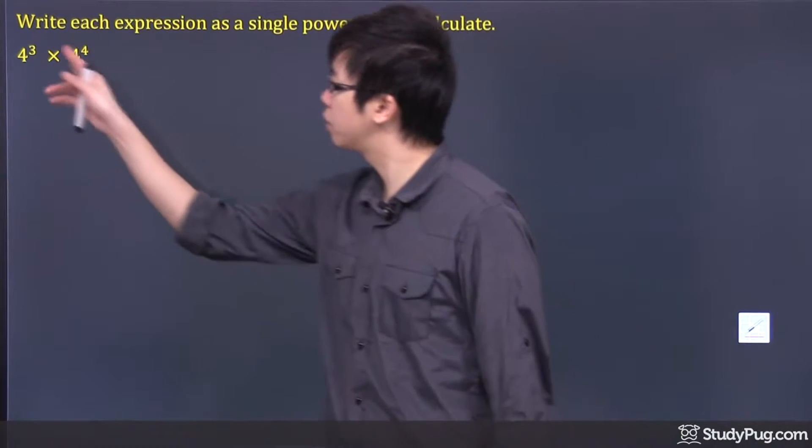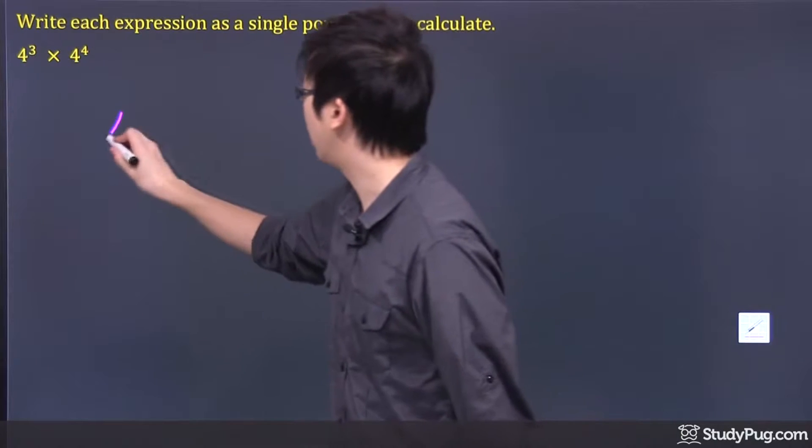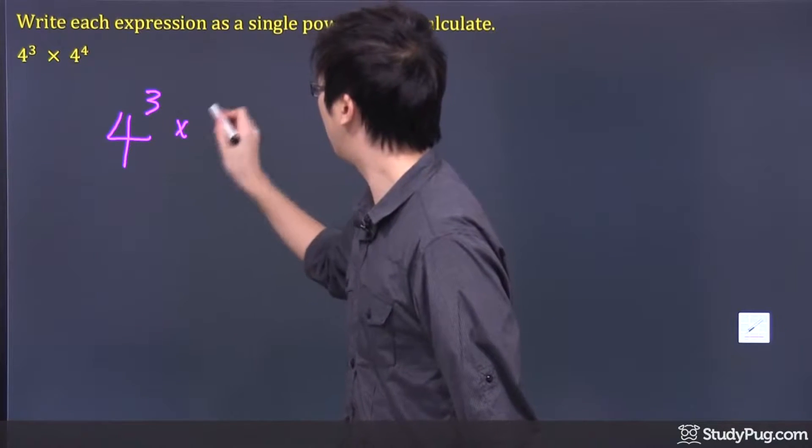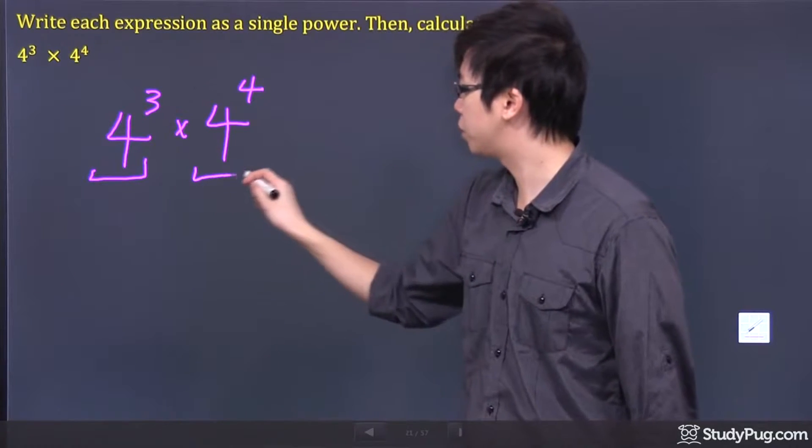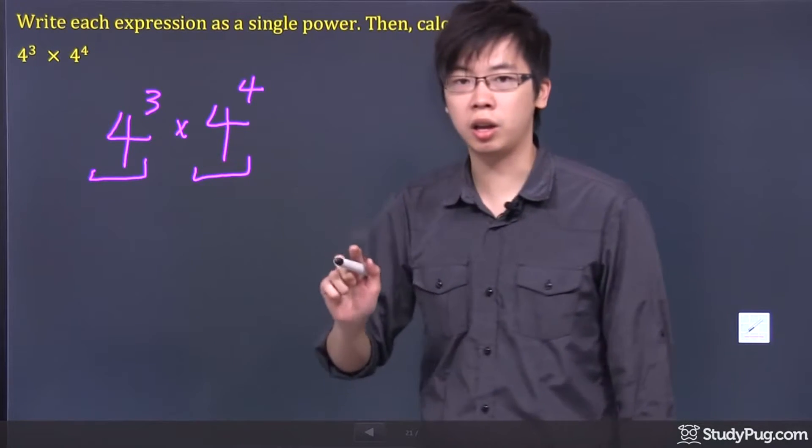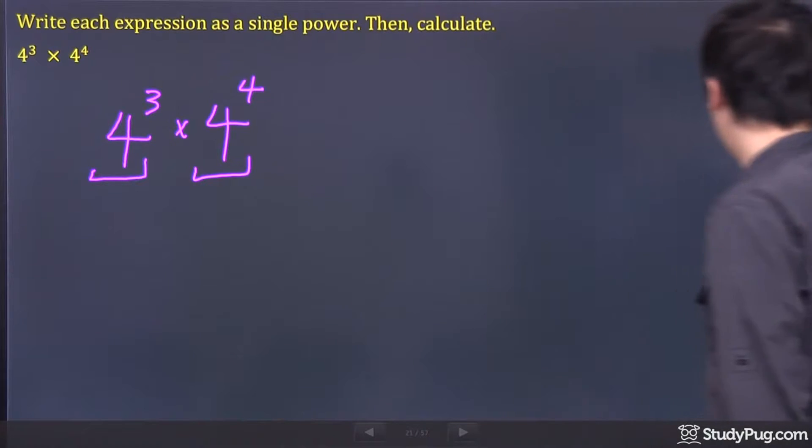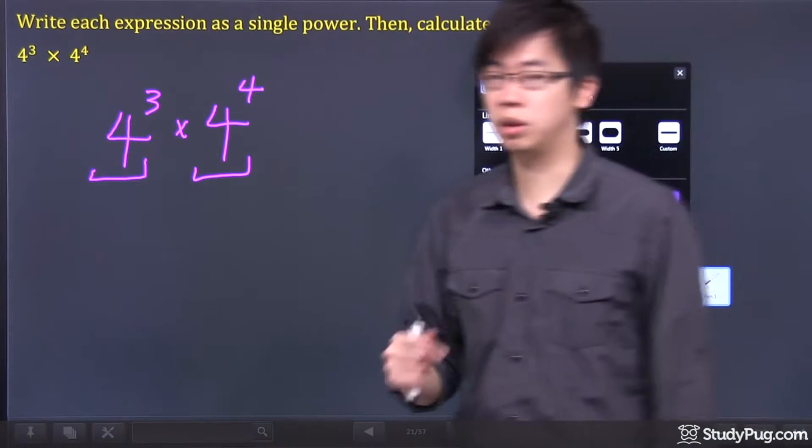If you look at it very carefully, it's 4 to the power of 3 times 4 to the power of 4. So the base number must be the same, and when you're multiplying, all you have to do is just add the exponents together.